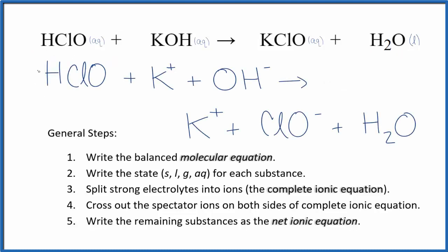So we didn't split the HClO, the hypochlorous acid, apart. When we split the KClO, we split this, we have our potassium ion, and then we have our hypochlorite ion, ClO minus. So this is the complete ionic equation.